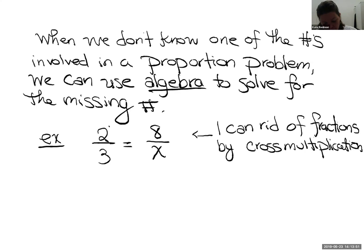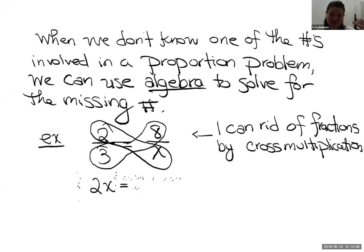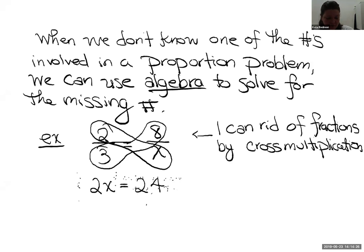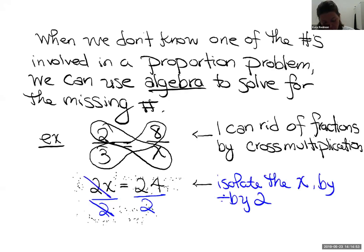My first step is to cross multiply. I'll start with the side that has X. There's X in the denominator — I'm going to multiply it by the numerator of the other ratio. Two times X is 2X, and that's equivalent to the other cross product — three times eight is 24. Now I've taken this proportion problem and turned it into a one-step algebra problem: 2X equals 24. To solve, I divide both sides by two, and X equals 12.